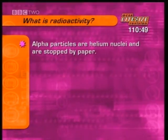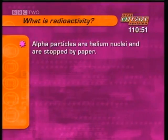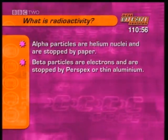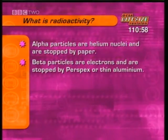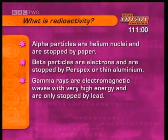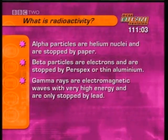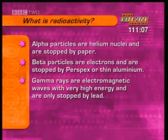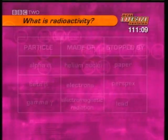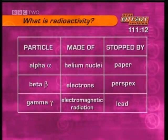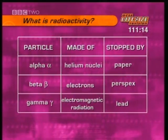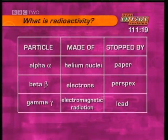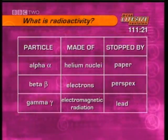Alpha particles are positive helium nuclei and are stopped by paper. Beta particles are negative electrons and are stopped by perspex or thin aluminium. Gamma rays are electromagnetic waves with very high energy and are only stopped by lead. It may be easier to remember in a table showing each kind of radiation, what they are, and what stops them. You can find a table like this on the GCSE Bitesize Physics website.